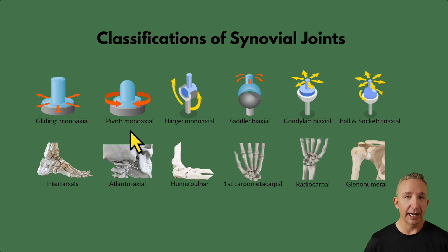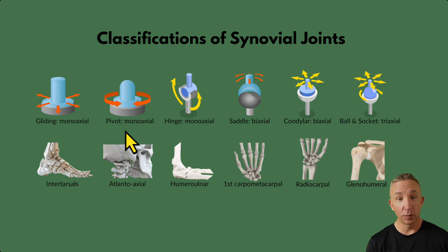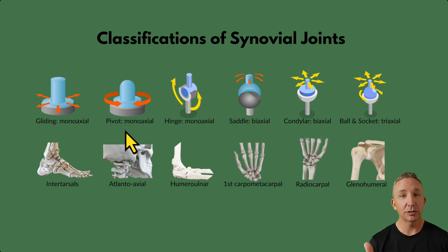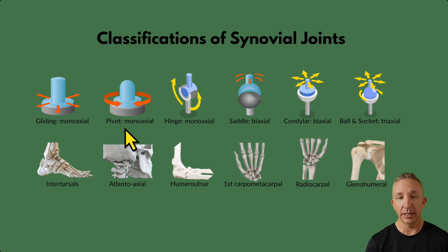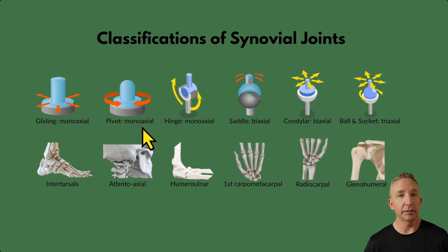A pivot joint is also monoaxial — on one axis. It typically involves a rounded portion of bone within a ring that's partially articulated with another bone. The best example is the atlas to the axis — our first two cervical vertebrae, C1 and C2. The dens or odontoid process of the axis articulates with the inner portion of the atlas. Held by a ligament, it creates the rotation we use when we pivot our head.